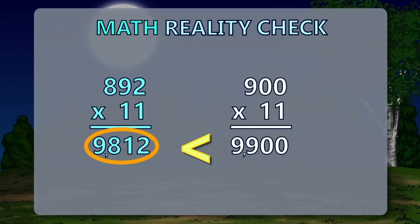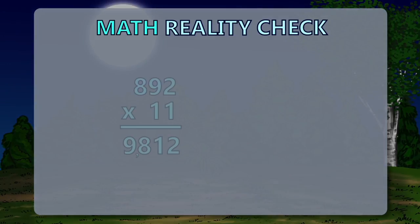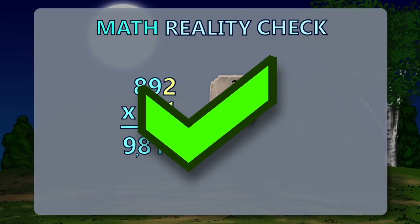Our answer should be less than 9,900 because we rounded up, and 892 is less than 900, but it should be pretty close. Our answer is 9,812 — reality check passed. A second math reality check is even easier: the last two digits are 2 and 1, and 2 times 1 equals 2, so no matter what, the last digit should be 2. We have 9,812 — check.